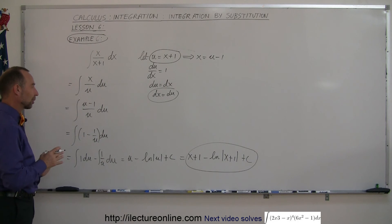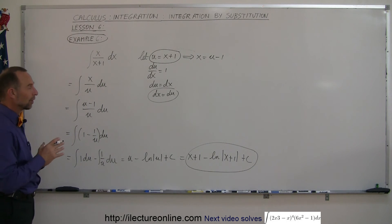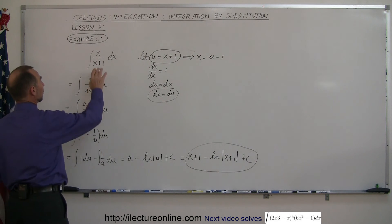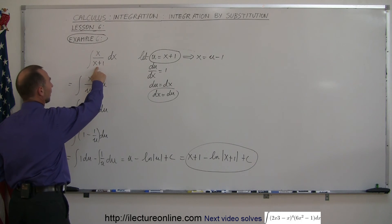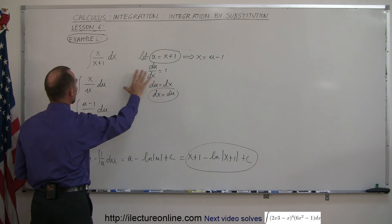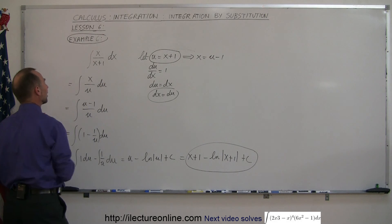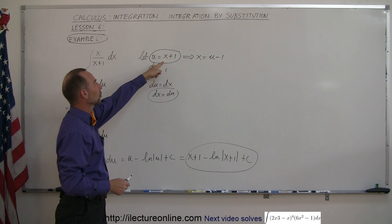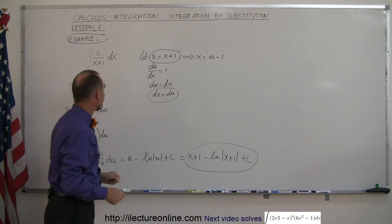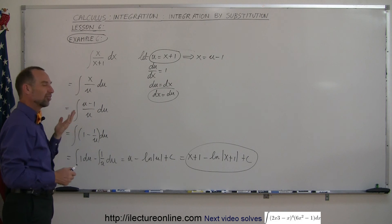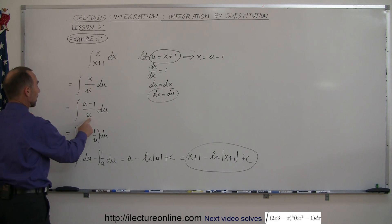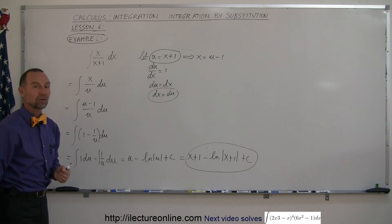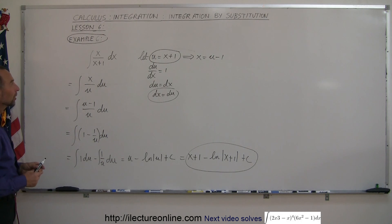If you've never seen this work out before, you probably won't think of it — so this is a good thing to memorize. First, let u equal x plus 1; that means dx equals du. Make the substitution, and you still have an x in there. The clever step is to solve for x, getting x equals u minus 1, and substitute. You still can't quite integrate it yet, but if you divide the denominator into the numerator, you end up with something you can integrate, and then you're on your way to solving it.